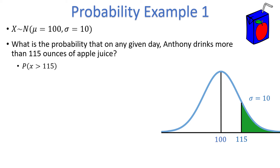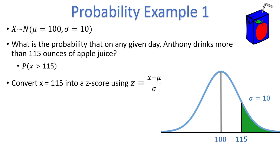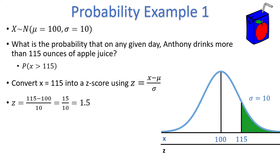Although not strictly necessary, it is common convention to convert to a z-score before plugging the numbers into the TI-84 calculator. We can convert x equals 115 into a z-score using the z-score formula: z is equal to x minus mu divided by sigma. x is 115, mu is the mean at 100, and sigma is the standard deviation at 10. So the z-score is 115 minus 100 divided by 10, or 15 divided by 10, which is 1.5. We can create a second horizontal axis on the graph that corresponds to z-scores. A z-score of 0 always corresponds to the mean, and 115 corresponds to a z-score of 1.5, meaning 115 is 1.5 standard deviations above the mean. The probability that x is greater than 115 is equivalent to the probability z is greater than 1.5.